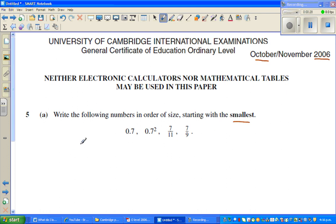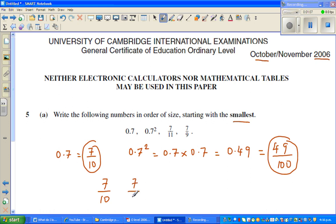So here we've got five numbers. We've got 0.7, that is 7 tenths. And this is 0.7 squared, means it is 0.7 times 0.7, which is 0.49. And 0.49 as a fraction is 49 out of 100. So this is, I would say, odd man out. So you've got 7 tenths, then you've got 7 tenths, 7 out of 11, and 7 out of 9.